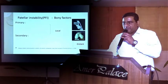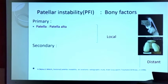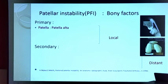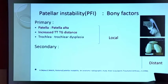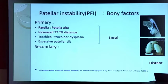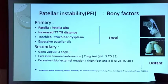Patella instability can be due to bony factors or soft tissue factors. Bony factors could be primary like patella alta, increased TTTG distance which is clinically seen as an increased skew angle, trochlear dysplasia, or excessive patella tilt. These are local bony factors. There are also distant factors like genu valgus and excessive femoral anteversion, which can be diagnosed by the crack test clinically, and external tibial rotation causing malalignment and patellofemoral instability, diagnosed by the thigh-foot angle.